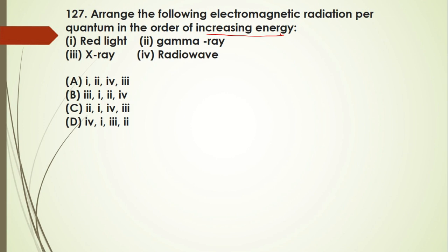Question 127: arrange the following electromagnetic radiations per quantum in the order of increasing energy. Increasing energy means the first element should have the minimum energy and the last one the highest. A simple arrangement: if we order the electromagnetic spectrum by increasing wavelength or decreasing energy or decreasing frequency, use the shortcut 'Gax Vimmer'.